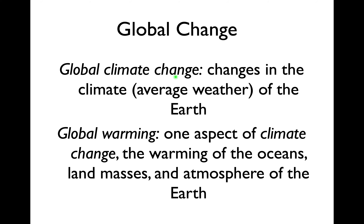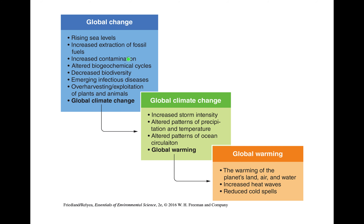Let's focus on number one first. Global change is at the top — it is any chemical, biological, or physical change in the properties of the planet. This is very broad and could include natural periods of change, so it's not necessarily man-made. Global climate change has to do with the weather of the Earth — is the weather changing? And then global warming is whether that weather pattern is specifically affecting temperature.